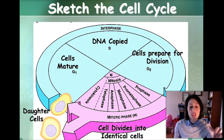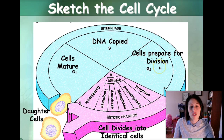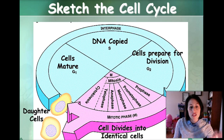Here's another picture of the cell cycle — you might want to pause the video here and sketch it really fast. I really like how this has a description: cells mature, DNA is copied, cells prepared for division. And then by the time all of this is over, we're going to end up with two daughter cells.